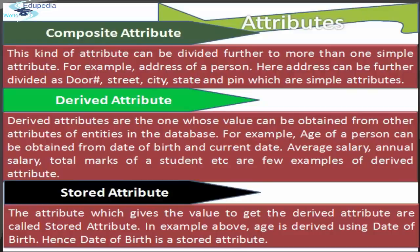First is the composite attribute. This kind of attribute can be divided further into more than one simple attribute. For example, the address of a person can be further divided into door number, street, city, state and pin — which are again simple attributes.